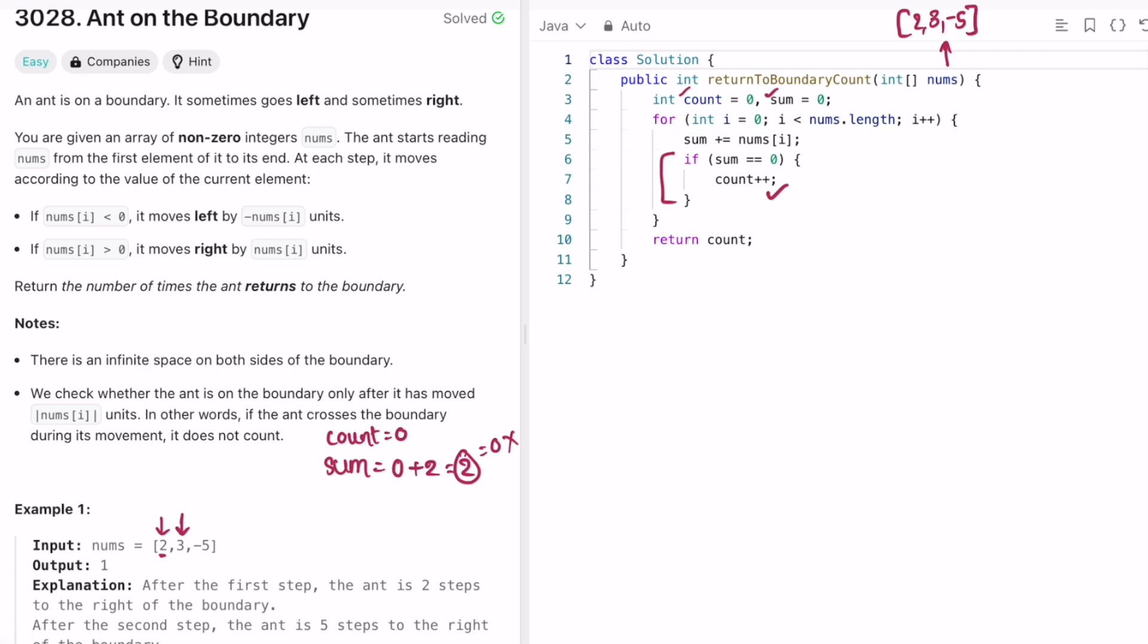So we go to the next element. In the next element it's three. So we add three to the current sum. So sum becomes five. We check if five is equal to zero. No. So count remains here and we go to the next element.